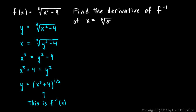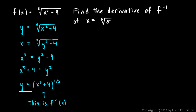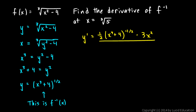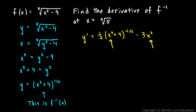I need to find the derivative of f inverse and then evaluate it at that particular value of x. Applying the power rule and chain rule, y prime equals one half times x cubed plus 4 to the negative one half, times the derivative of the inner function, which is 3x squared. Now we plug in the cube root of 5 for x in both places.